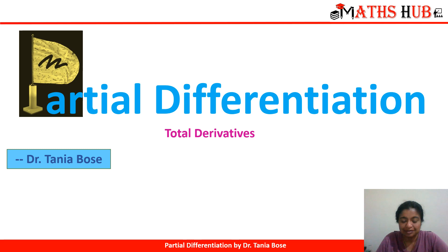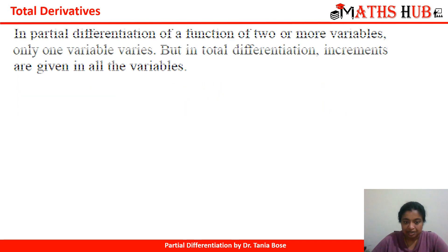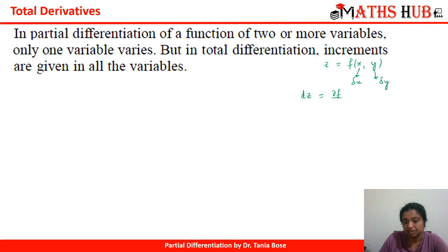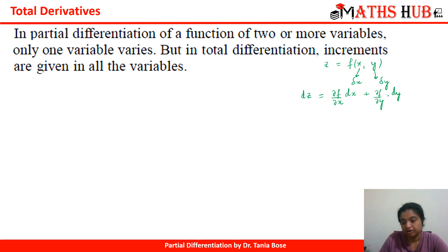Hello students and welcome to my channel Mathsab. Today in this video I will be focusing on total derivatives. When a function has more than one variable and we have to calculate the total variation in the function — there will be some increment in x, some increment in y — the total change dz is the change in the function with respect to x times dx, plus the change with respect to y times dy.